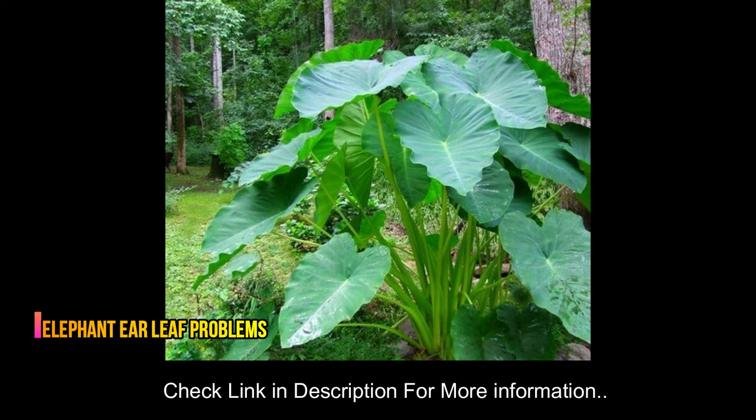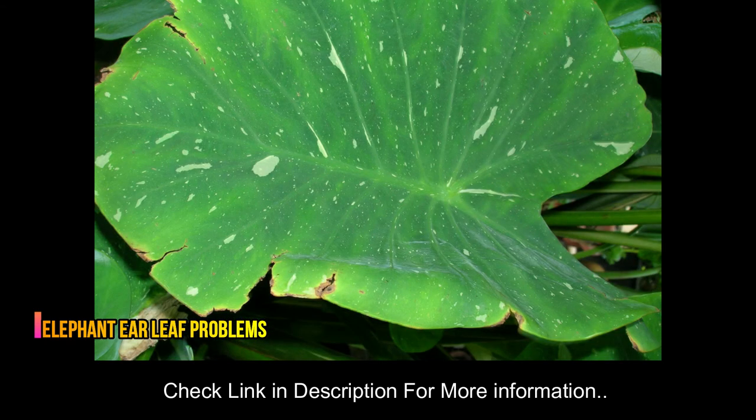The most common problem in elephant ear plants is leaf blight, a fungal disease that causes tan spots due to constant moisture. Other problems with the leaves are bacterial leaf spots, leaf scorch, spider mites, and phyllosticta leaf spot. To fix these leaf spot diseases and pests, you need to carefully spray fungicide, and there are various other ways to get rid of these problems.